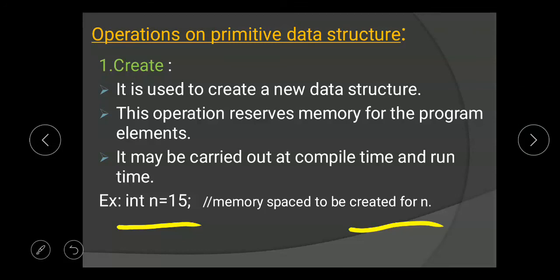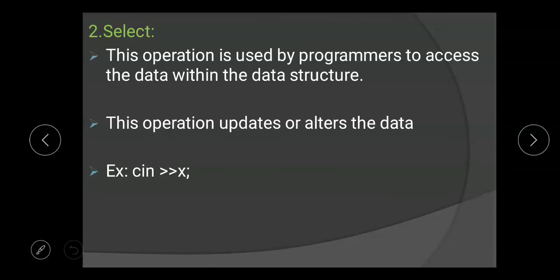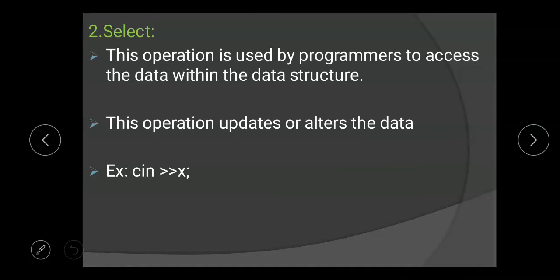Next is the select operation. This operation is used by programmers to access the data within the data structure. If we create data using the create operation — for example, if we create x as a data — then the select operation is used by the programmer to access that data within the data structure.